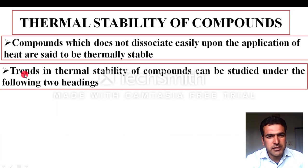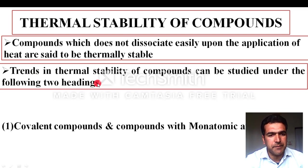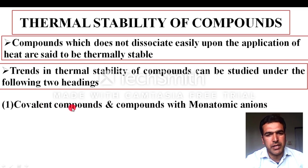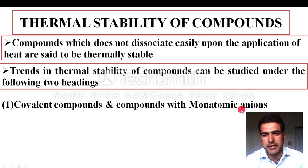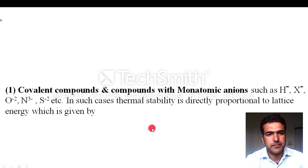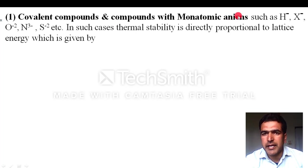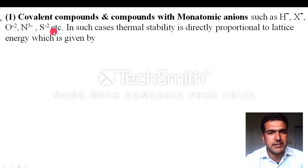Now let's discuss trends in thermal stability. Trends in thermal stability can be studied under two headings: first, covalent compounds and compounds with monoatomic anions; second, compounds with polyatomic anions. Monoatomic anions include hydride, halide, oxide, nitride, sulphide, etc.